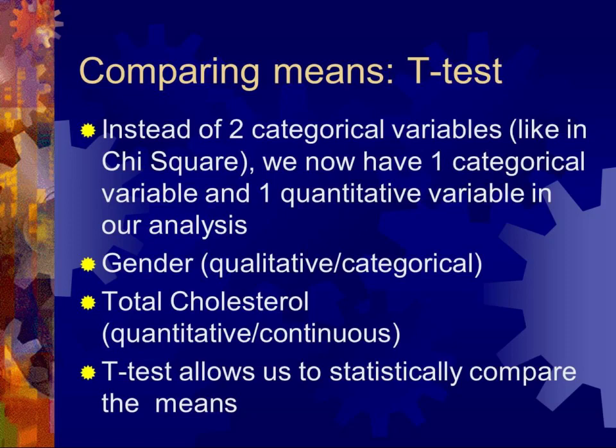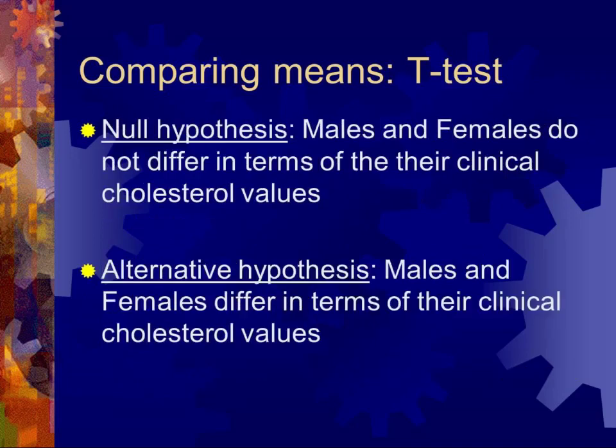The t-test allows us to statistically compare the means of the two categorical groups. We form a hypothesis: the null hypothesis is that males and females do not differ in terms of their clinical cholesterol levels as determined by the mean. And the alternative hypothesis is the opposite — that there is in fact a difference.